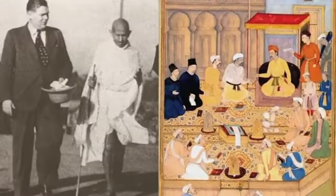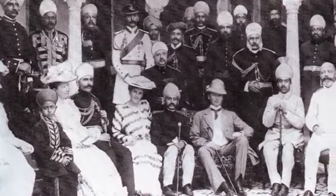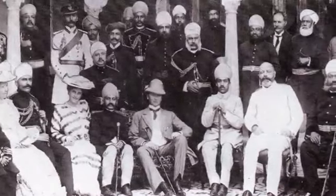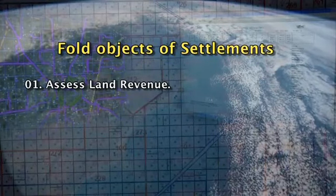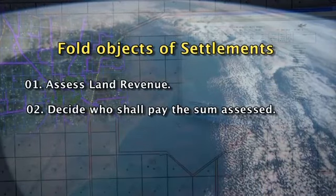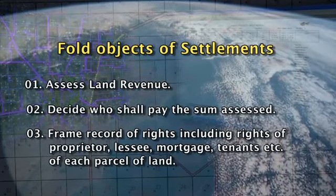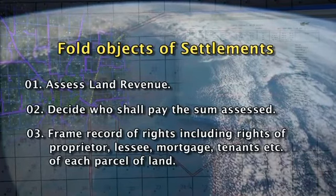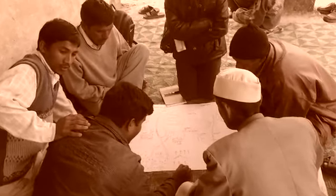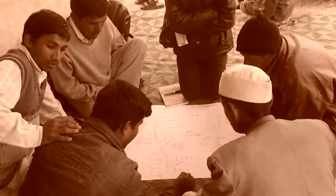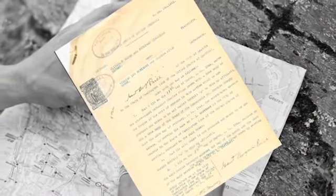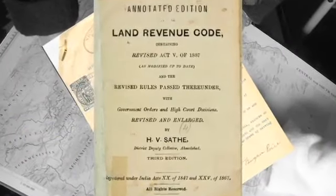During the British period, the British inherited the institutional form of the agrarian system from the Mughals. They rationalized the levy and collection of land revenue from landholders by conducting cadastral surveys to determine village boundaries. Summary settlements had three-fold objectives: firstly, to assess land revenue; secondly, to decide who shall pay the sum assessed; and thirdly, to frame records of rights including rights of proprietor, lessee, mortgagee, tenants, etc. of each parcel of land. Maps prepared by young officers were done in haste, having inaccurate measurements causing incorrect summary settlements. The first Land Revenue Act was passed in 1871, followed by the second Land Revenue Act of 1887.